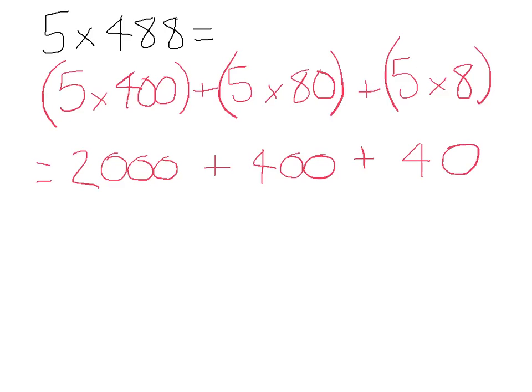So now that we've worked out those individual hundreds, tens and ones, we add them all together. So the answer to 5 times 488 is 2440.